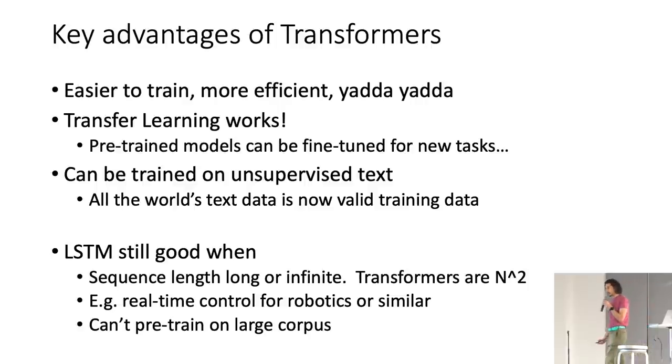LSTM still has its place. In particular, if the sequence length is very long or infinite, you can't do n squared. And that happens if you're doing real-time control, like for a robot or a thermostat or something like that. You can't have the entire sequence. And if for some reason you can't pre-train on some large corpus, LSTM seems to outperform transformers when your dataset size is relatively small and fixed.